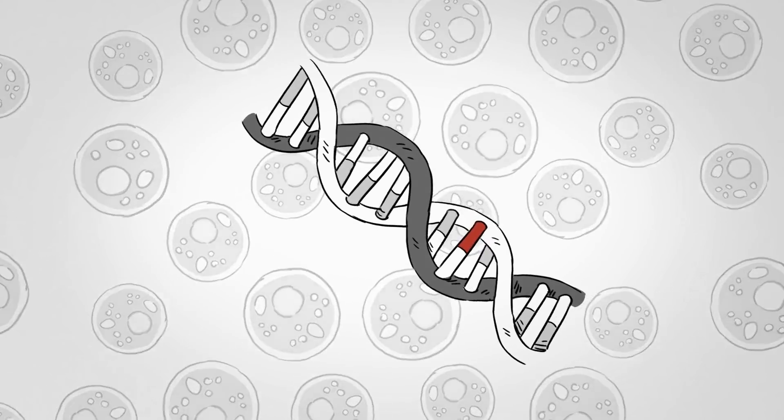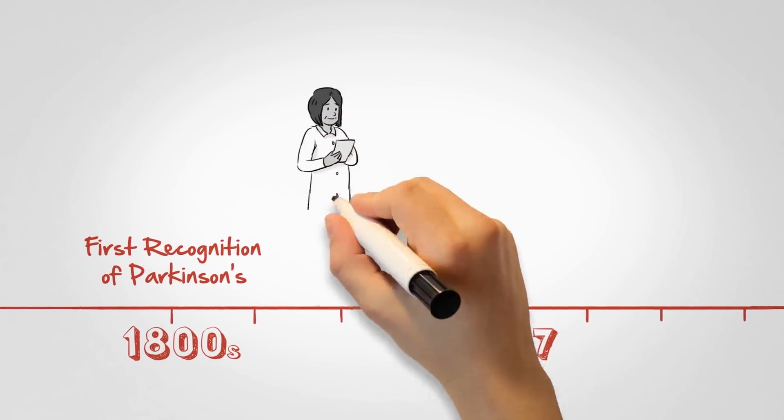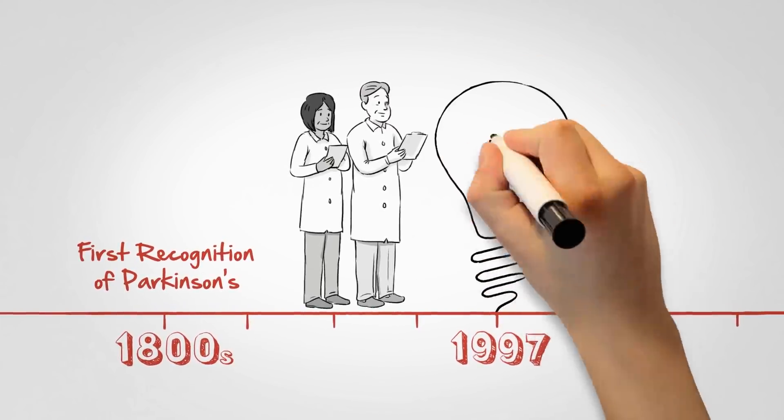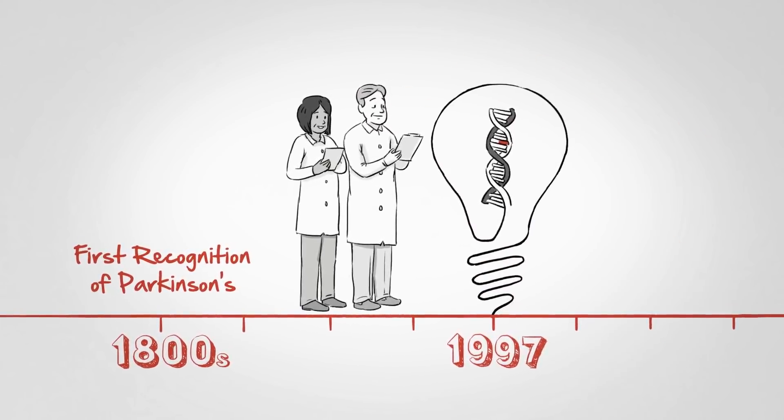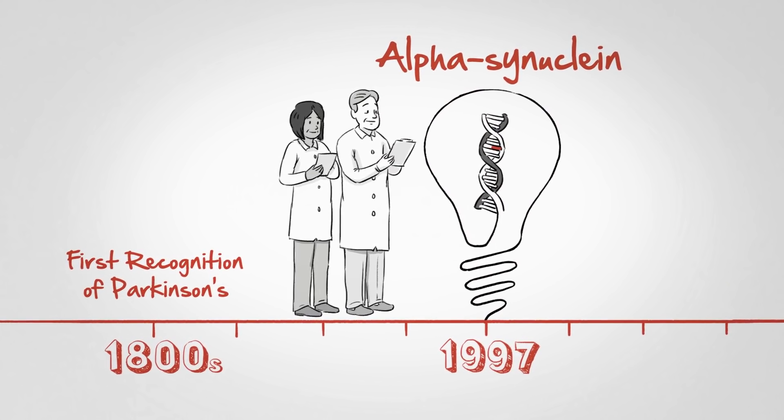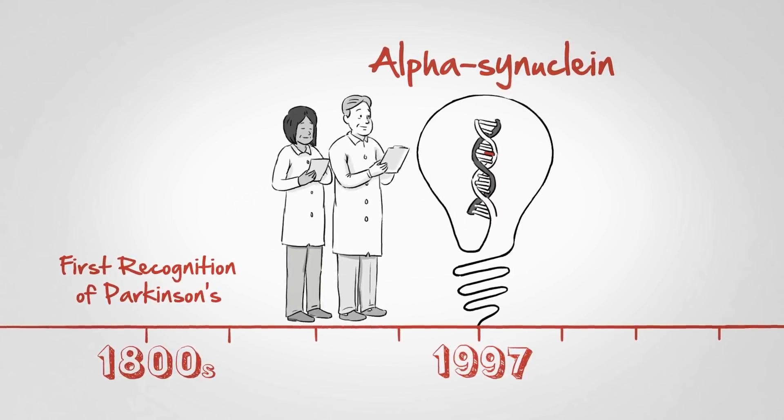For a long time scientists thought Parkinson's didn't have a genetic connection, but that has changed. In 1997, a research group at the National Institutes of Health discovered a connection between Parkinson's and a rare mutation in a gene called alpha-synuclein. This mutation caused alpha-synuclein to clump in the brain and body cells of people with Parkinson's.